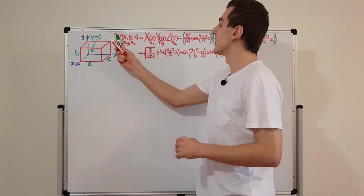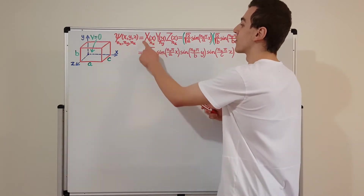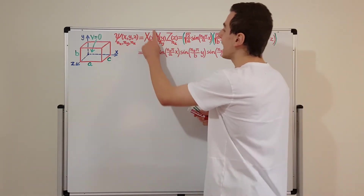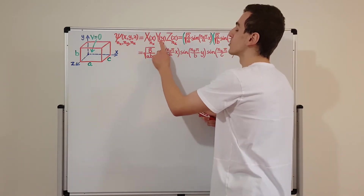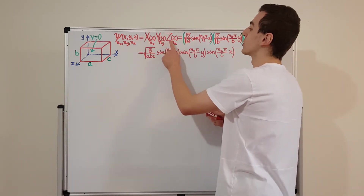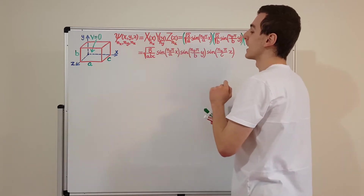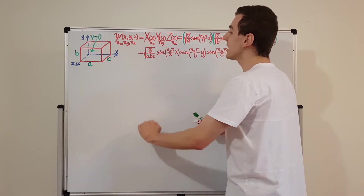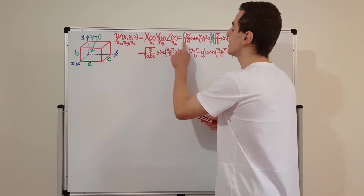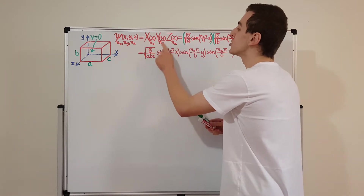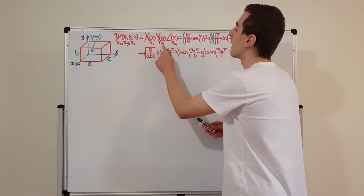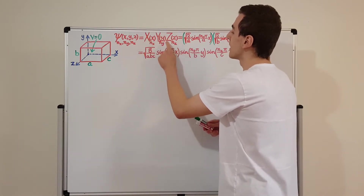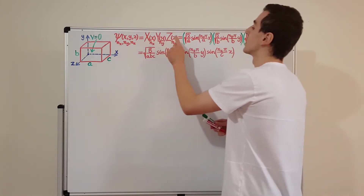I wrote psi as the product of three functions that only depend on one variable: X, which was only a function of x; Y, which was only a function of y; and Z, which was only a function of z. We found there were actually not just one version of these functions, but an infinite number of versions of each, all specified by integer values nx, ny, and nz. The capital letters denote the functions, and the lowercase letters denote the coordinates.